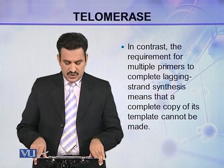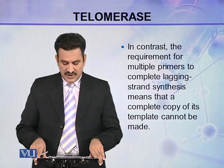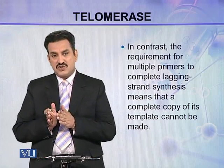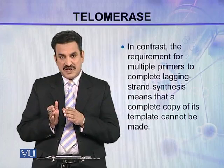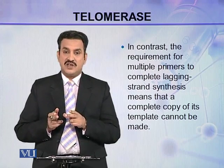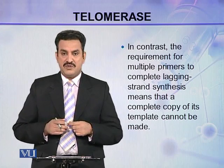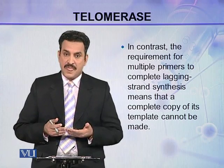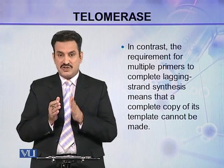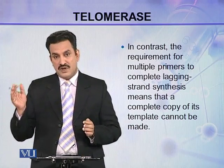In contrast, the requirement for multiple primers to complete lagging strand synthesis means that a complete copy of its template cannot be made. Along the lagging strand, synthesis takes place in the form of fragments called Okazaki fragments, and for each Okazaki fragment there is a separate new RNA primer. Due to that requirement, the synthesis of the new strand along the lagging strand cannot extend up to the extreme end of the chromosome.